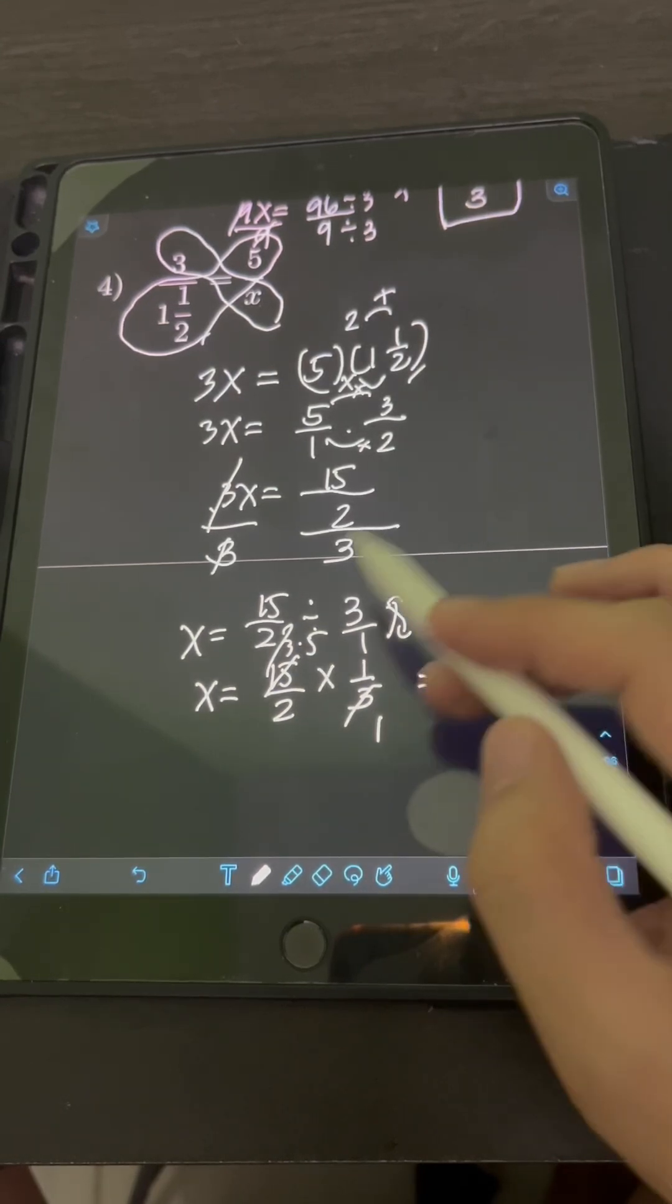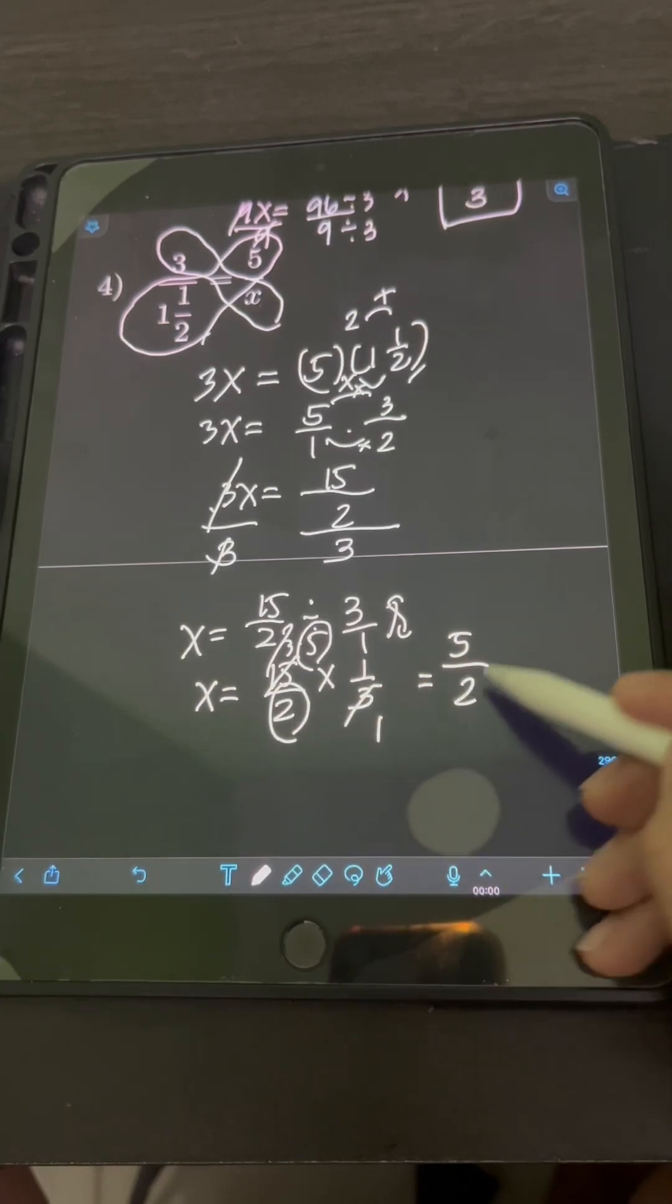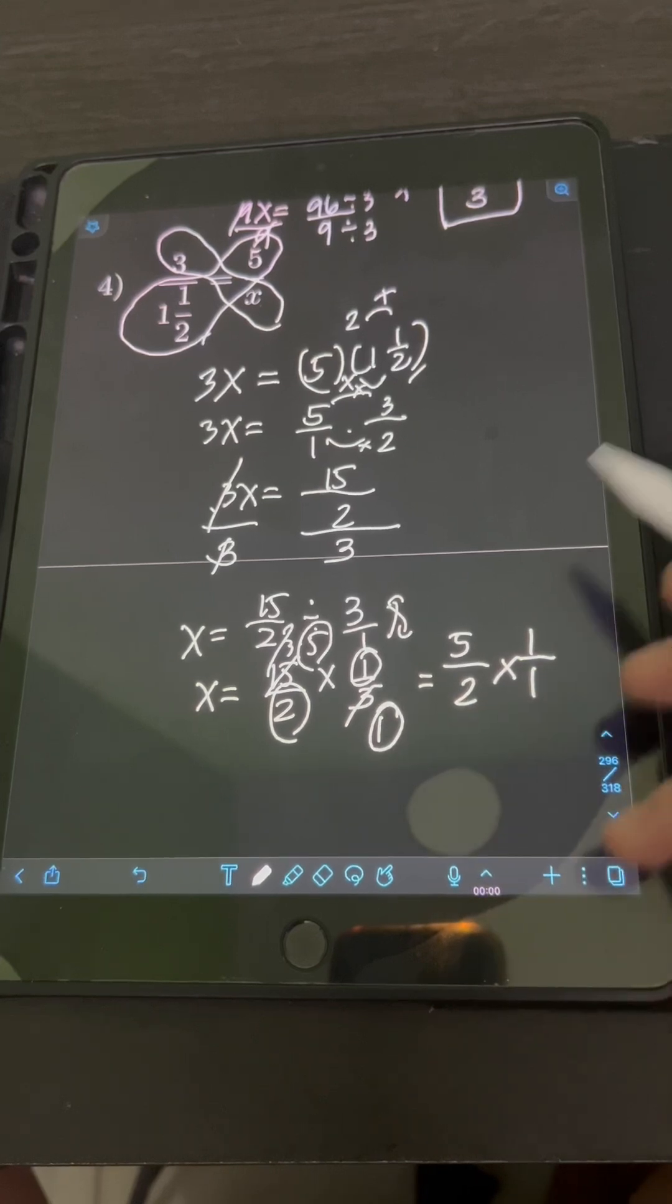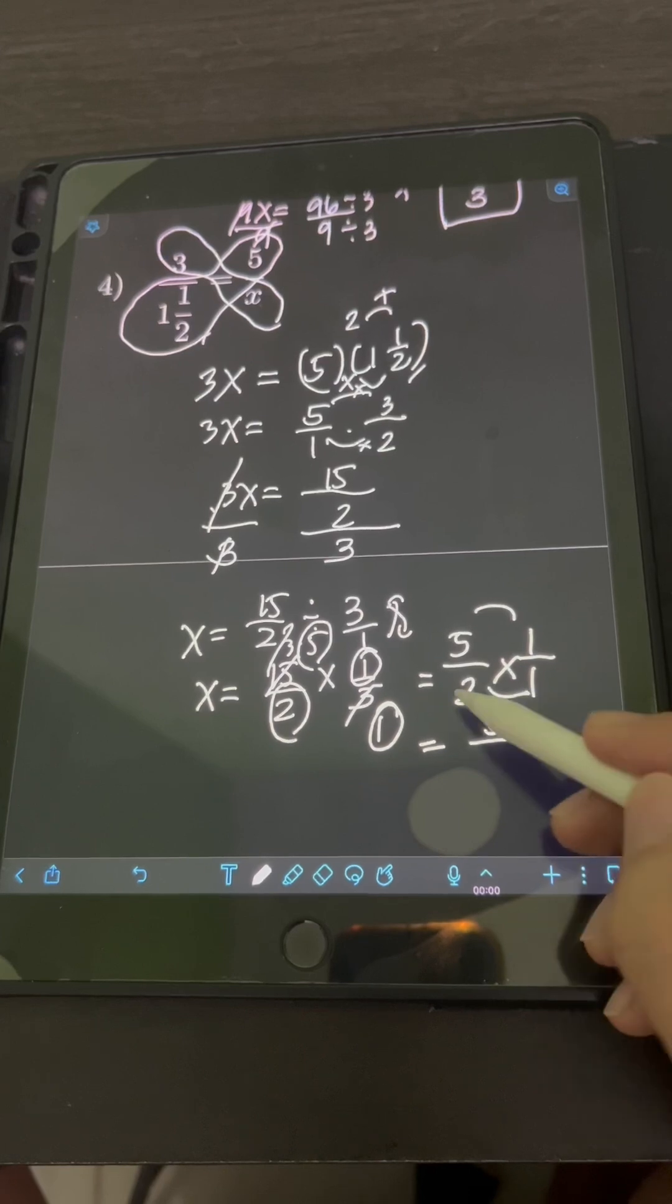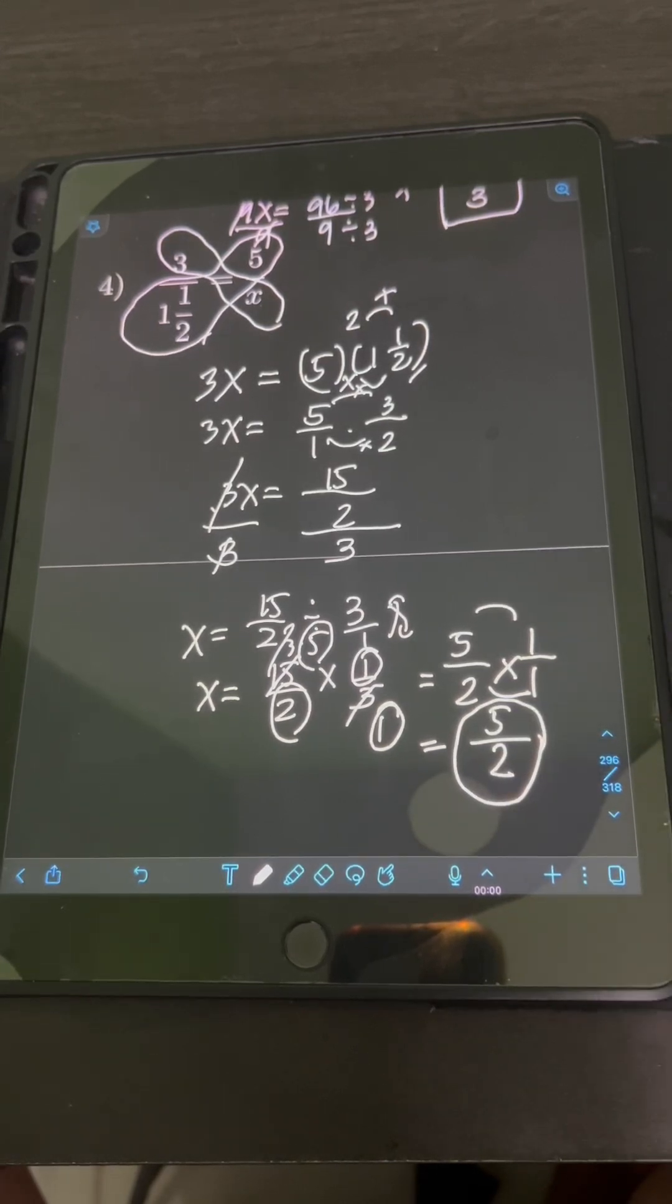So we are left with 5 over 2 times 1 over 1. Or if we multiply 5 times 1, that's 5, over 2 times 1, that's 2. So the final answer is 5 halves.